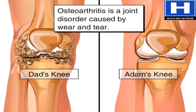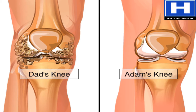Osteoarthritis is a chronic disease — a disease that persists for a long time. It causes the deterioration of the cartilage within a joint. For most people, the cause of osteoarthritis is unknown, but metabolic, genetic, chemical, and mechanical factors play a role in its development.